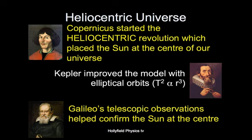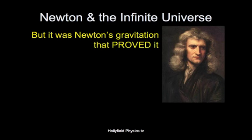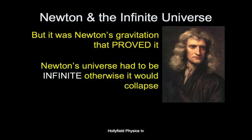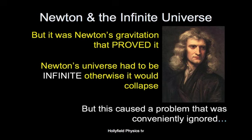Another really great improvement was the telescope. Galileo was the first person to point his telescope to the heavens, and this certainly helped confirm the Sun at the centre of our universe. What really clinched it though was the work of Isaac Newton and his gravitation. His gravitation put Kepler's observations onto a firm scientific footing. One thing with Newton's universe however, because of his gravitation, he realised very quickly that it needed to be infinite — otherwise it would have collapsed.